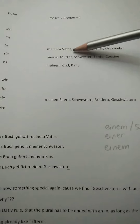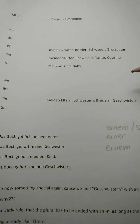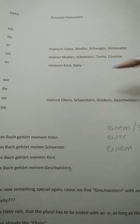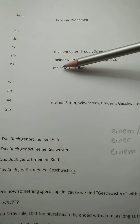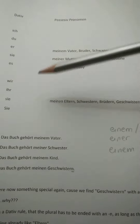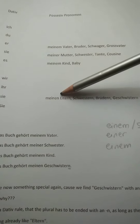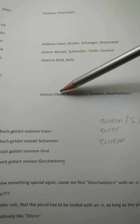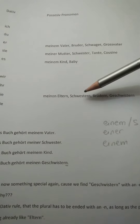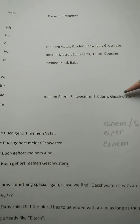So here the same rule: meinem is the masculine description, meiner is the feminine description, and meinem is about baby or Kind. And sie becomes meinen, so you are using here the plural — Eltern, Schwestern, Brüdern, Geschwistern.